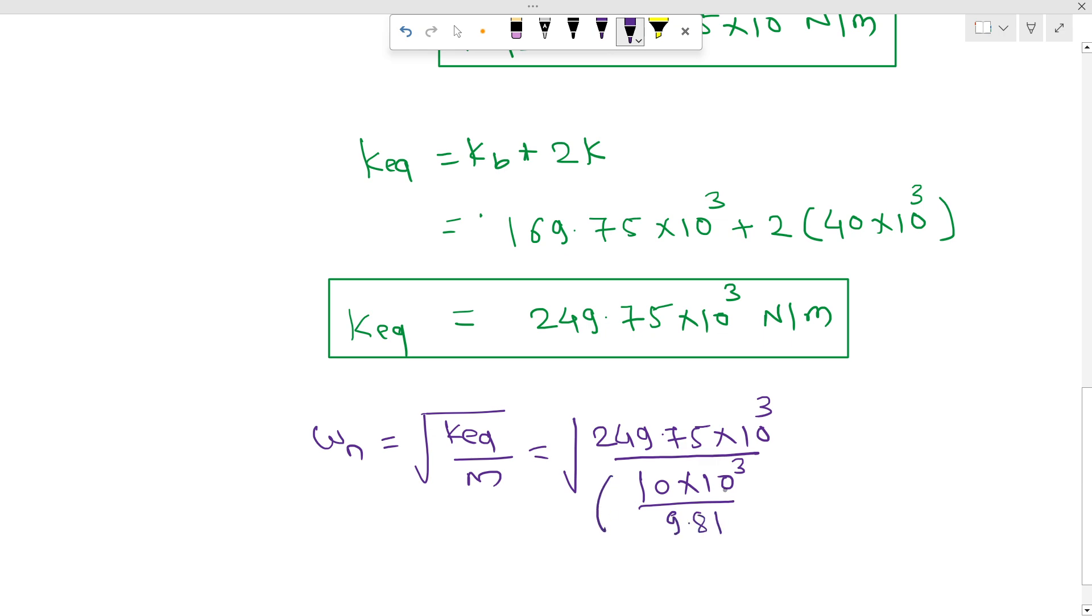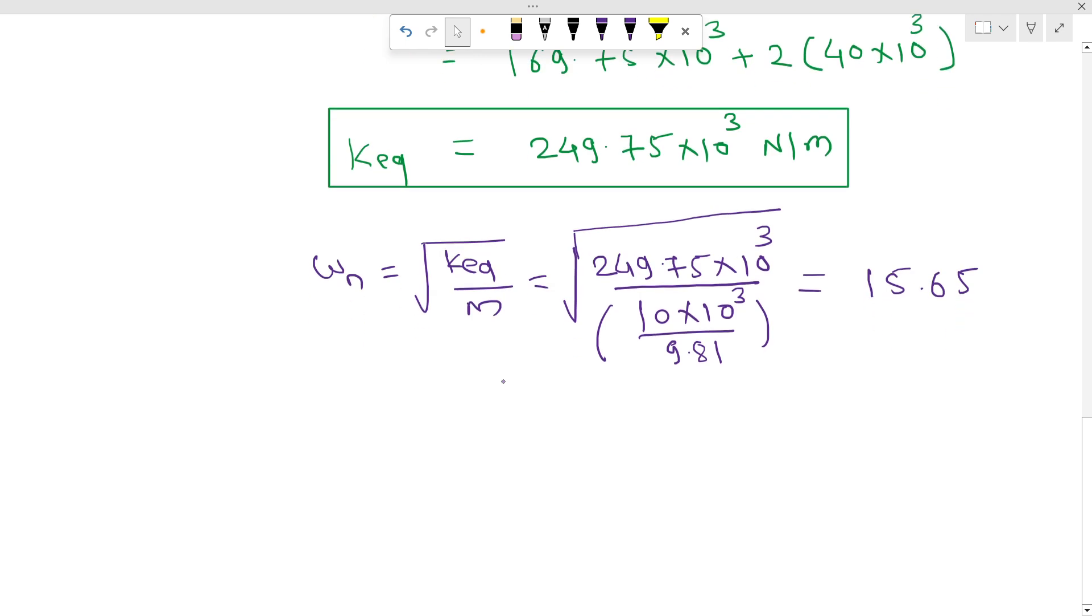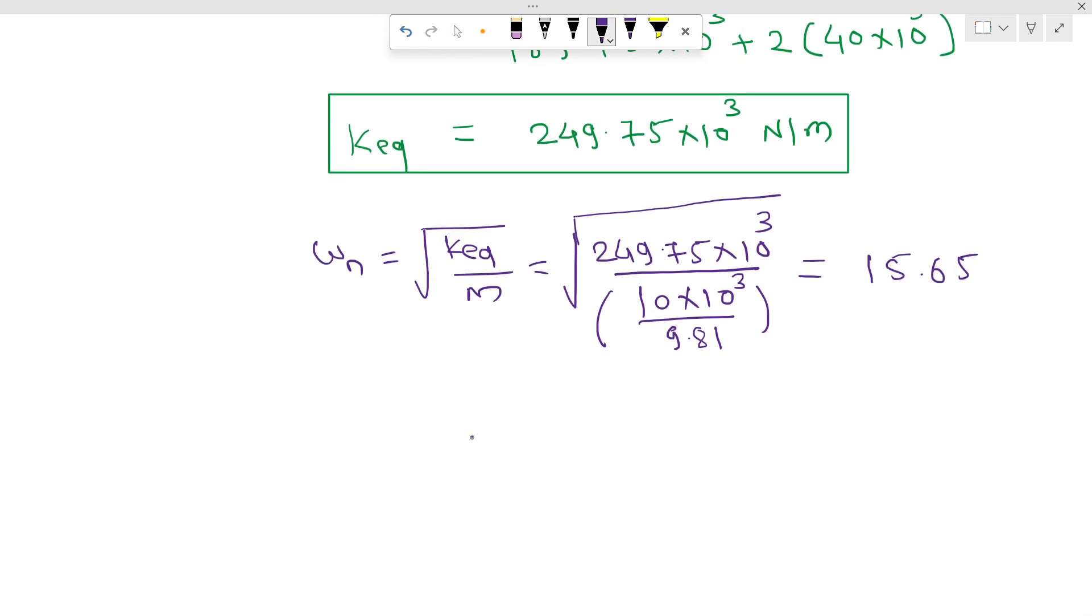So we have to solve this. Our answer will be 15.65, so I can say omega n will be equal to 15.65 radian per second.